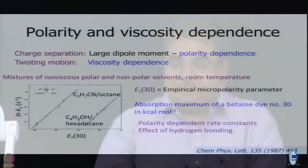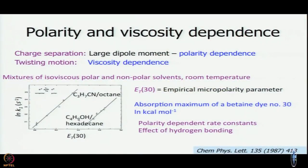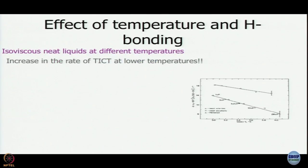We have a polarity-dependent rate constant, that is for sure, and there is some effect of hydrogen bonding. The second piece of experiment they did — the earlier one, remember, was mixtures: isoviscous mixtures at room temperature.